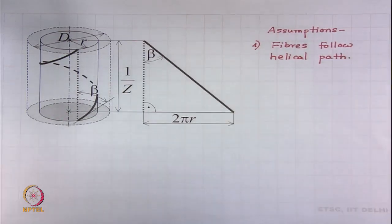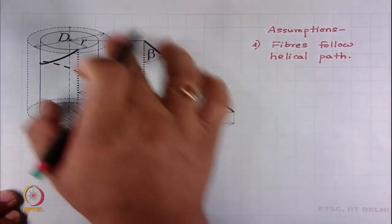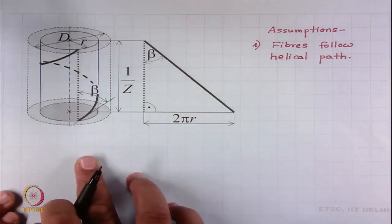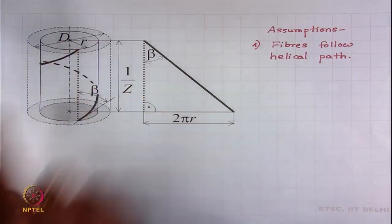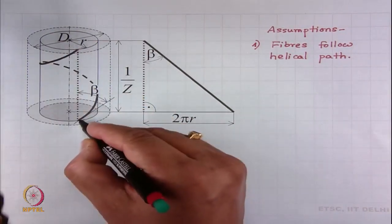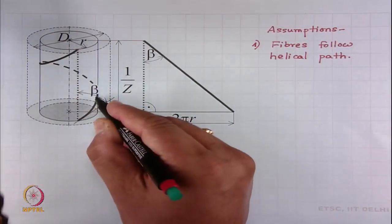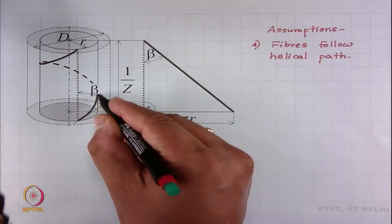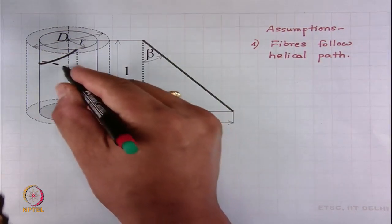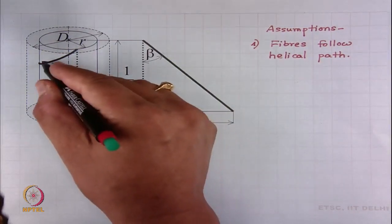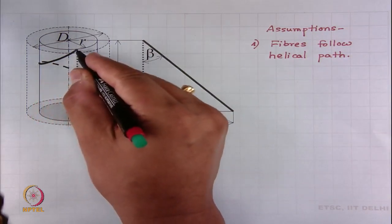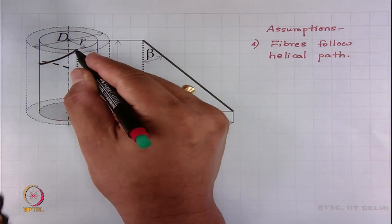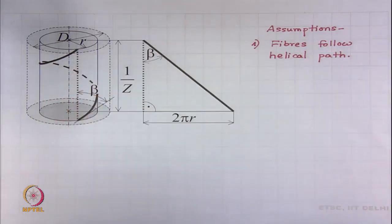In a cylindrical yarn, the fibre follows a helical path. You see the thick portion of the fibre on the surface, then the fibre goes inside as a dotted line — you do not see it. Then again it comes to the surface, seen as a thick black line. The fibres follow a helical path.